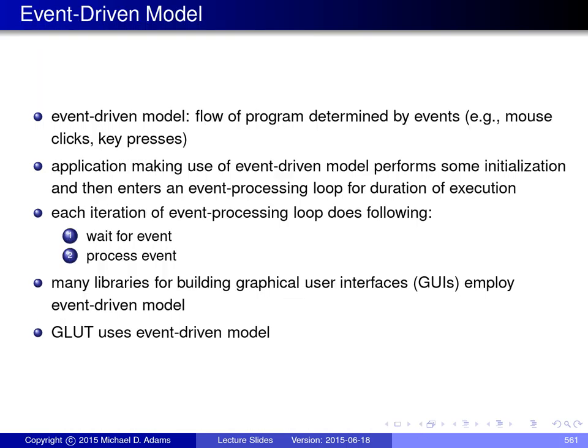The GLUT library is based on an event-driven programming model. In this model the flow of the program is determined by events, where an event might correspond to a mouse button being pressed or released, a key being pressed or released, or a window being resized. An application using an event-driven model performs some initialization when it starts up, then enters an event processing loop for the duration of its execution. Each iteration simply waits for an event to occur, processes it, then goes back to waiting. Many libraries for building graphical user interfaces employ event-driven programming models, and GLUT uses such a model.